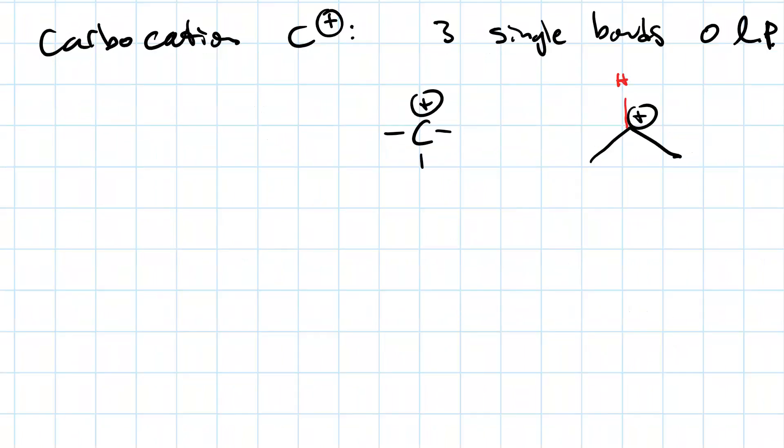Now, you may be wondering, why does a carbocation have to have three single bonds? Why couldn't it have a double bond and a single bond and a lone pair? Let's look at that. And this would be called a vinylic carbocation, since the carbon is involved in a double bond. So why isn't this allowed?